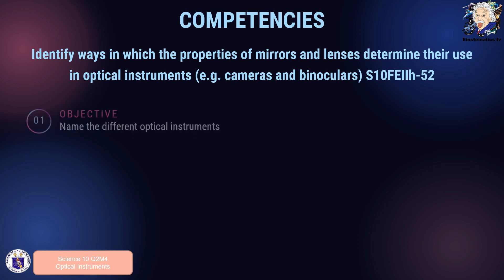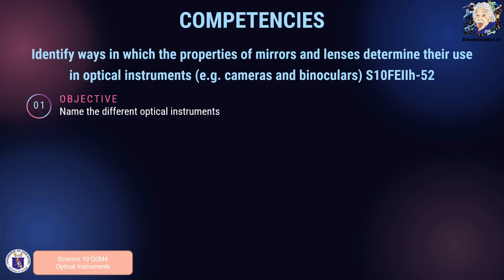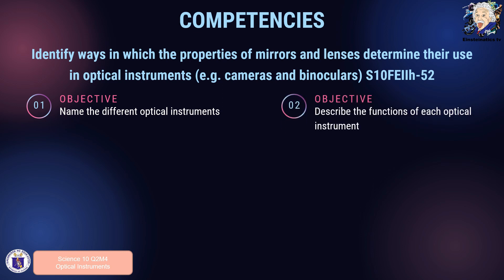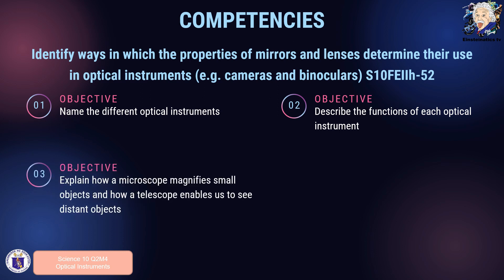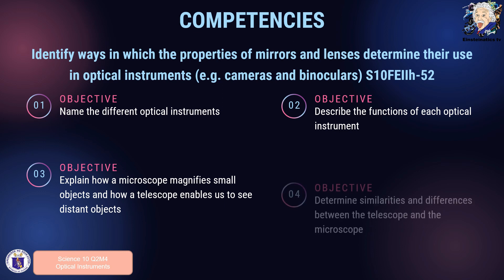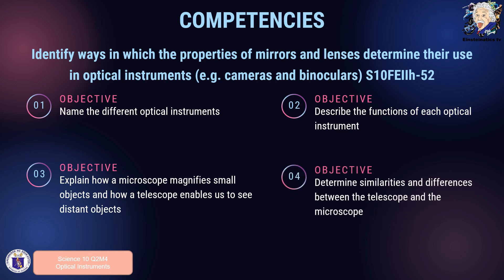Specifically, we have the following objectives. First, we are going to name the different optical instruments. Then, we are going to describe the functions of each optical instrument. Next, we are going to explain how a microscope magnifies small objects and how a telescope enables us to see distant objects. And lastly, we are going to determine the similarities and differences between the telescope and the microscope.